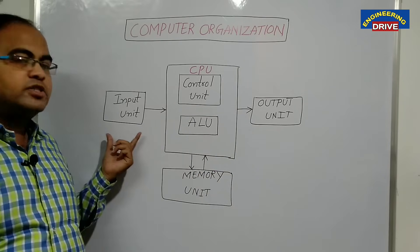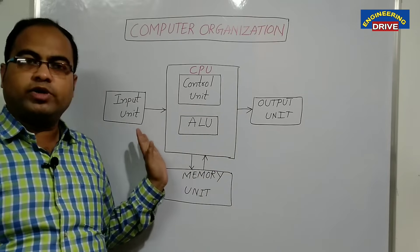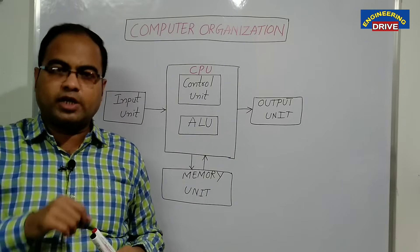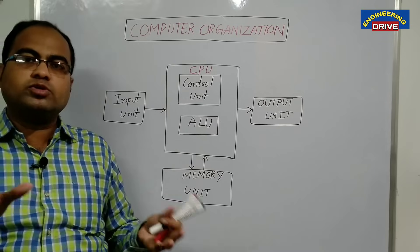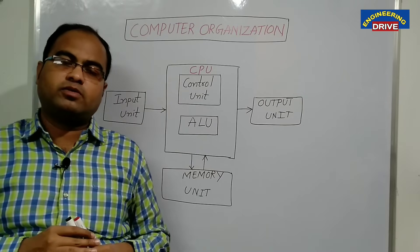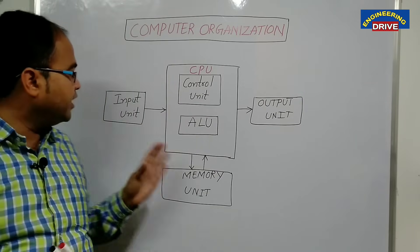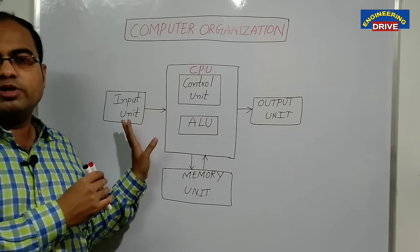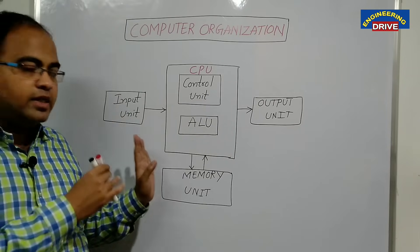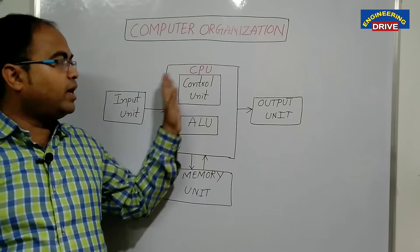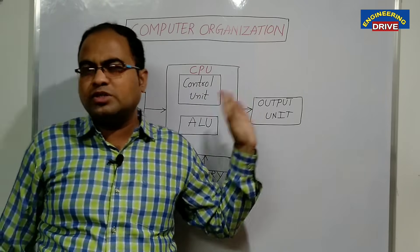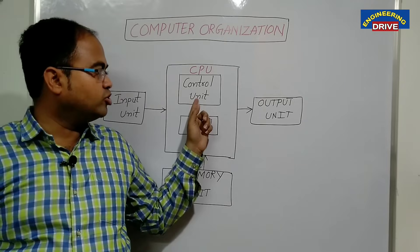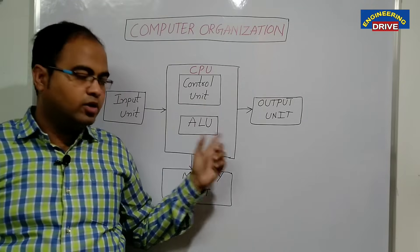What is the job of the input unit? Whenever the user presses keys from the keyboard, or whenever the user uses the mouse on the computer, the data will be immediately given to the input unit. The input unit will take the data, analyze it, and pass it to the CPU. In the CPU there are two things: one is the control unit, another one is the ALU.